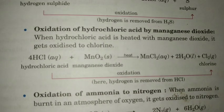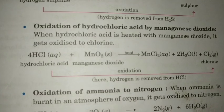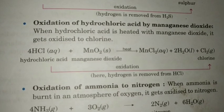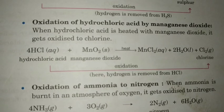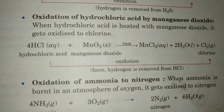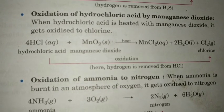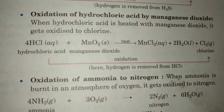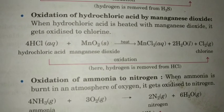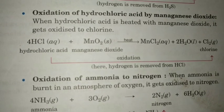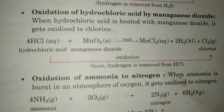The next point is oxidation of hydrochloric acid by manganese dioxide. When hydrochloric acid is heated with MnO2, it gets oxidized to chlorine. From HCl to Cl2 — removal of hydrogen takes place, so HCl is getting oxidized. Addition of oxygen and removal of hydrogen is oxidation.